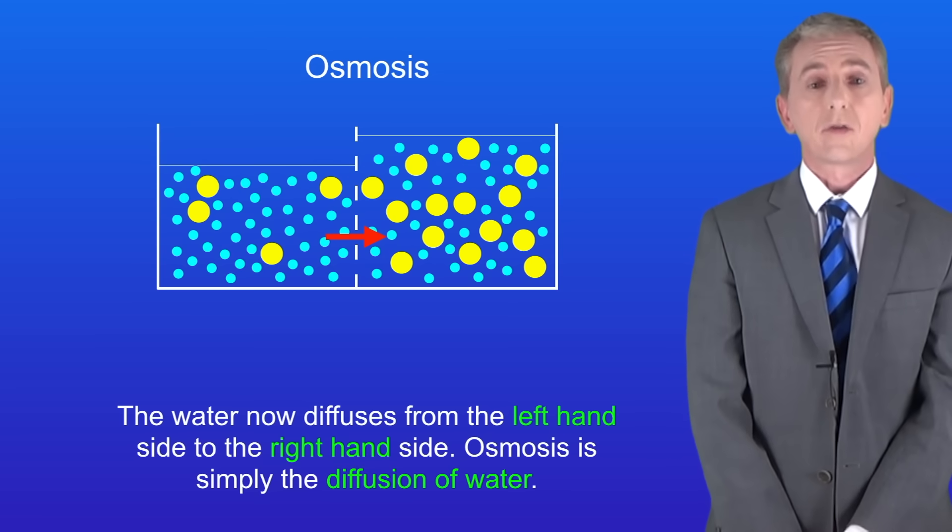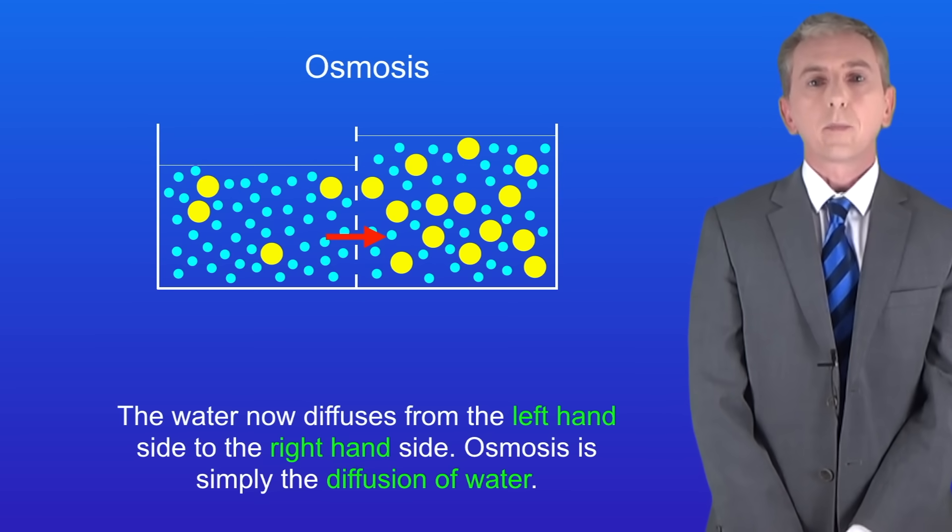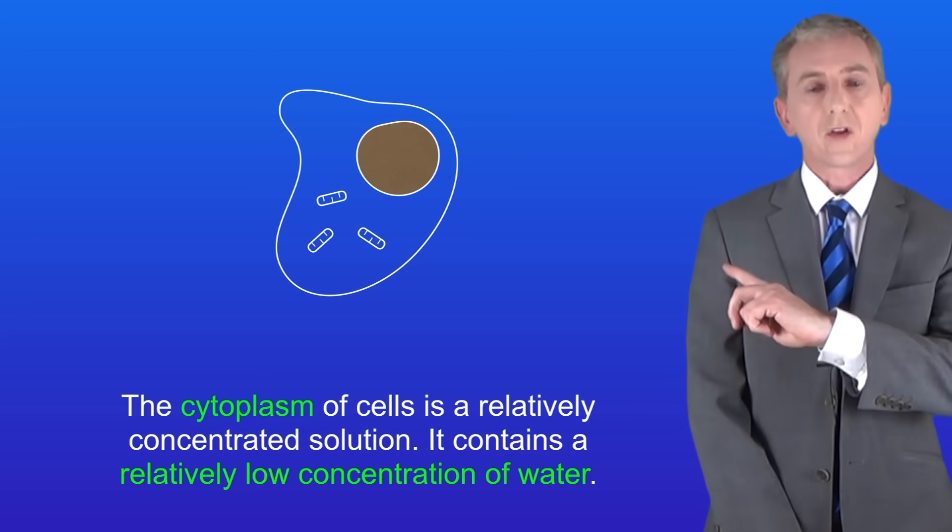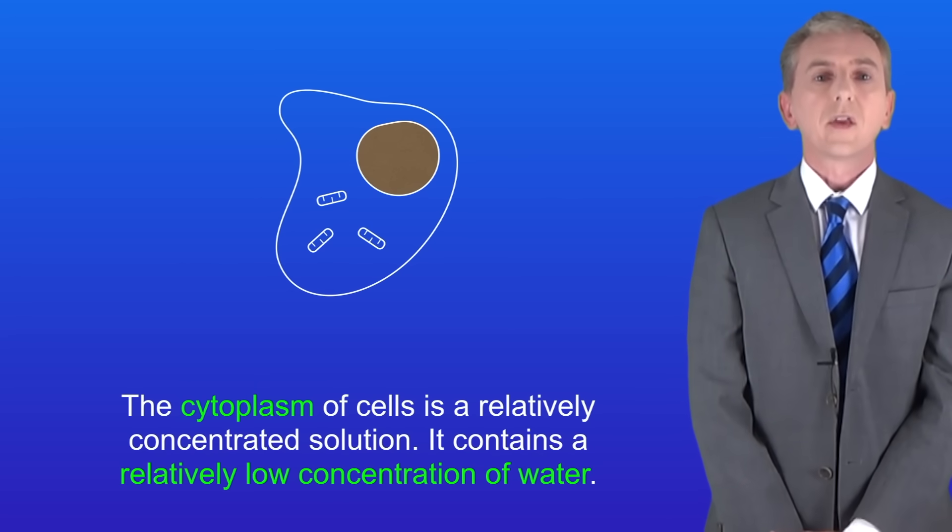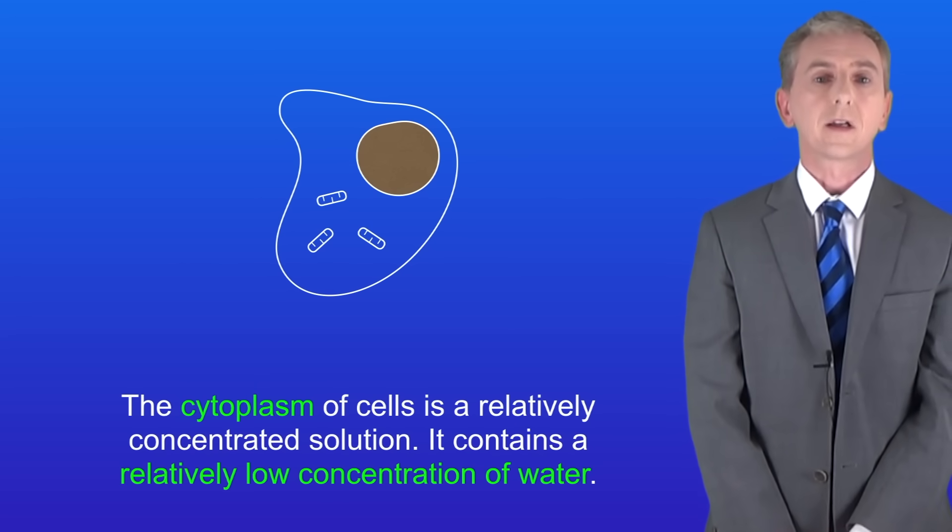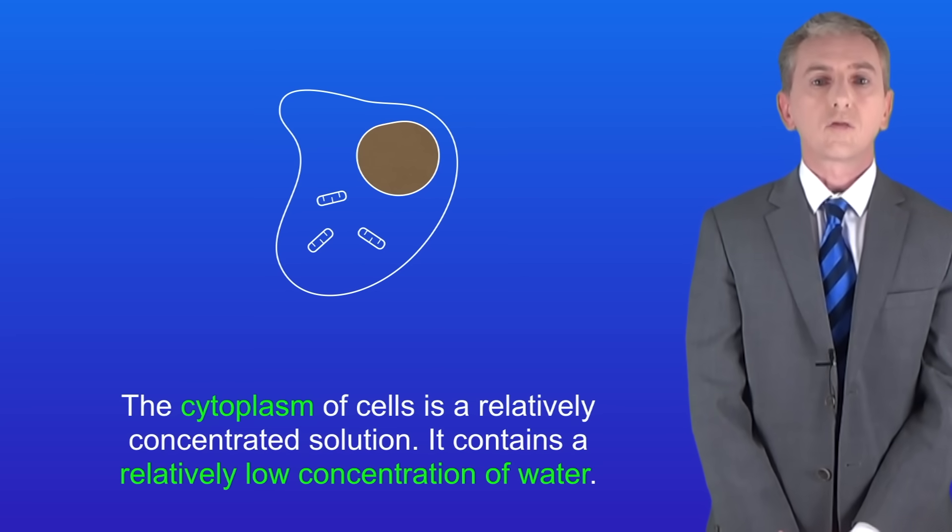Now osmosis can have major effects on cells. So let's look at that now. I'm showing you an animal cell here and this brings us to a key point. The cytoplasm of cells is a relatively concentrated solution. In other words it contains a relatively low concentration of water.